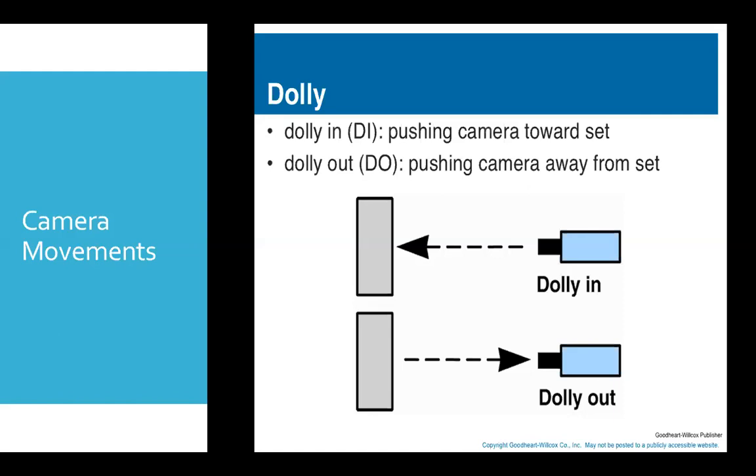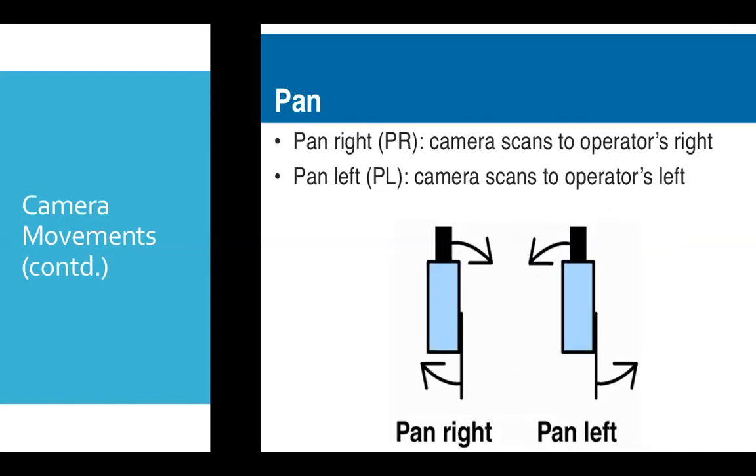This is about the dolly movement of camera. Now let's talk about the pan movement. Pan movement is actually the horizontal movement of camera.